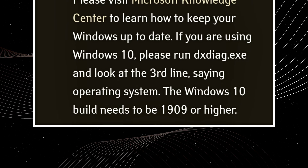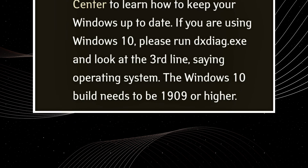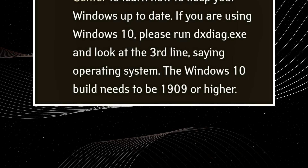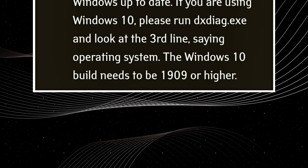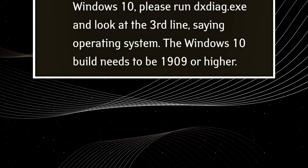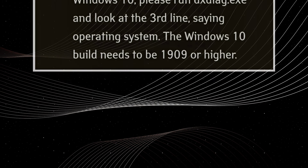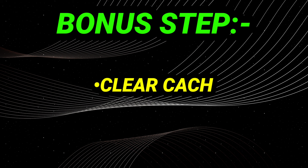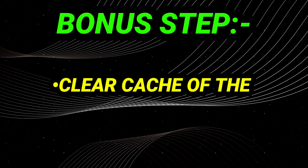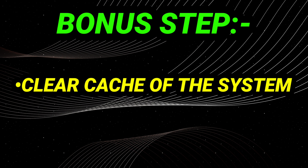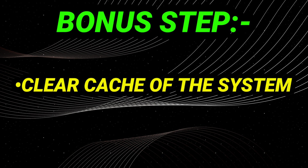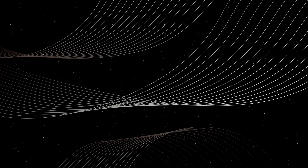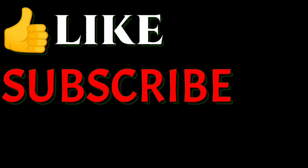If you are using Windows 10, run DXDIAG.exe and look at the third line saying 'Operating System.' The Windows 10 build needs to be 1909 or higher. The bonus step is to clear the cache of your system — both these steps are very helpful. Do like this video and don't forget to subscribe to my channel.